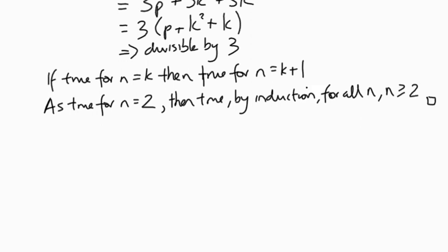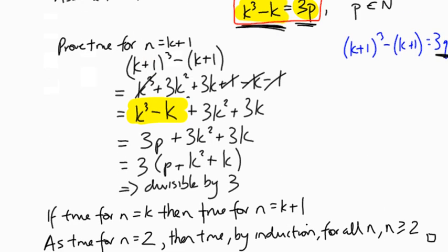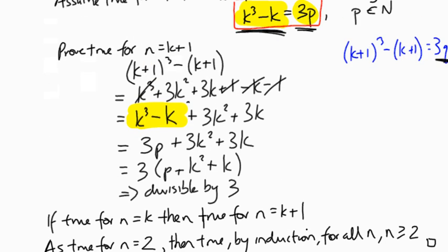There we go. So that's proof by induction for a conjecture that's not involving sigma notation. We've still got to use some algebra to try and substitute the assumed formula into our proof for the k plus 1 term. There's one more example. You can have a go at that as well. It's got an inequality in it, so they're interesting to explore. So hopefully that was helpful.